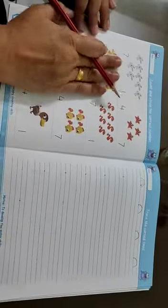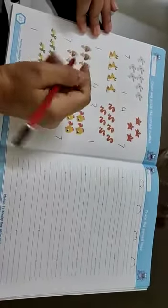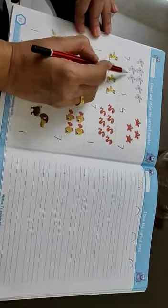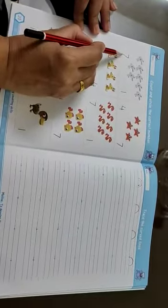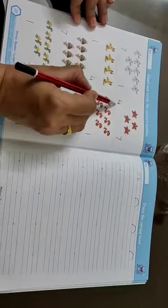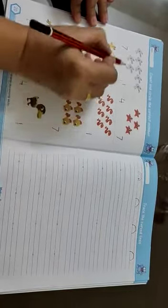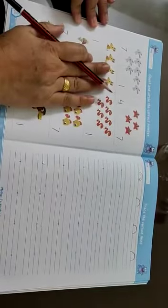So that both of us, you as well as me, should come to know whether the child recognizes whether it is number 7 or number 1 or number 4. So let the child circle it himself, okay?